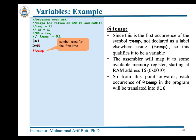The '@temp' instruction creates a variable named 'temp' since this is its first occurrence and it is not declared as a label. The assembler maps this name to the first available memory register starting from RAM address 16. From this point onward, each occurrence of '@temp' is translated to '@16'. The 'M=D' instruction then performs the task 'temp = R1', writing the contents of RAM 1 to RAM 16.